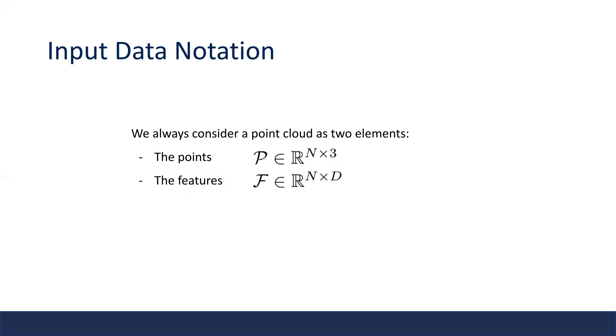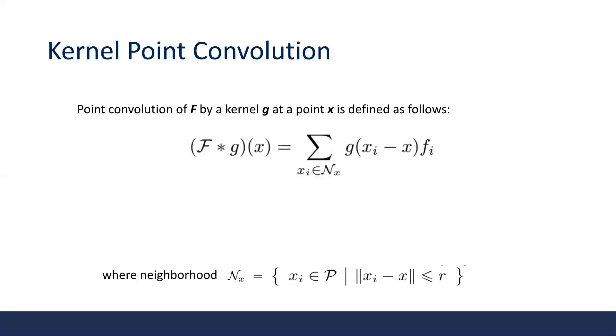These features can be some simple pointwise attributes. A general form of the kernel point convolution is very similar to a basic convolution operator.